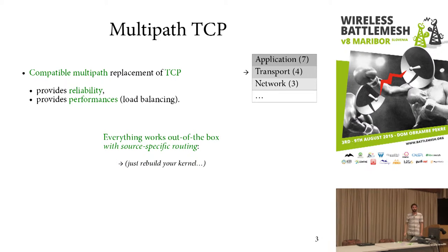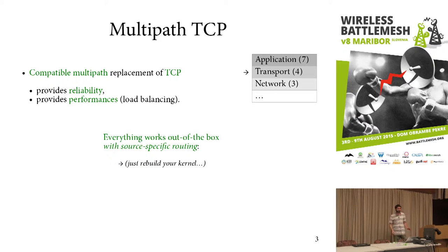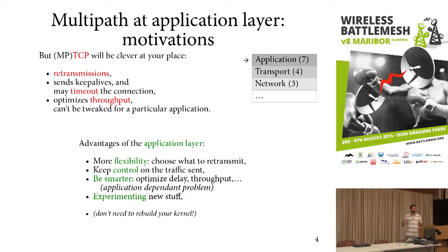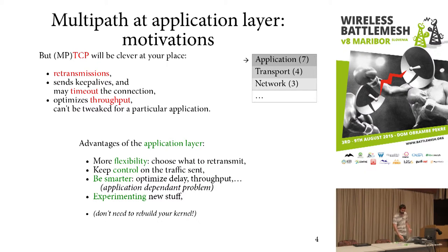At the transport protocol layer, we have multi-path TCP, which works just great. But the problem is that it simulates a flow as TCP, and sometimes you want to be clever and avoid retransmission, because your application protocol can do things better. Also, multi-path TCP optimizes throughput, so if your application wants to optimize delay or other metrics, you will want to use another protocol, especially over UDP.